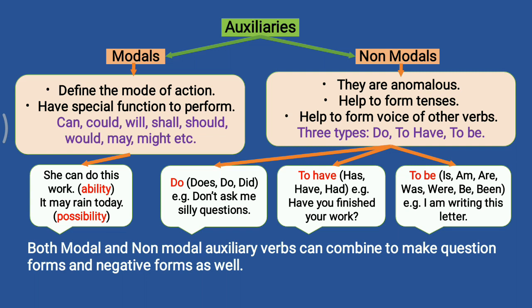On the other hand, non-modals are anomalous; they help to form tenses and voice of other verbs. There are three types of non-modals: do, have, and be. 'Do' includes the forms does, do, did — for example: 'Do not ask me silly questions.' 'Have' can be used as has, have, and had — for example: 'Have you finished your work?' 'Be' has the forms is, am, are, was, were, be, been — for example: 'I am writing this letter.' Both modal and non-modal auxiliary verbs can combine to make question forms and negative forms as well.